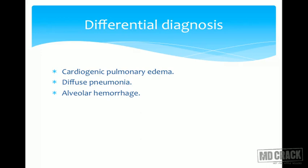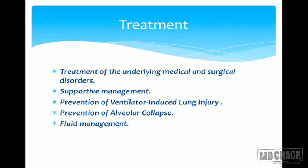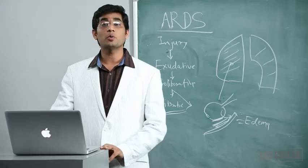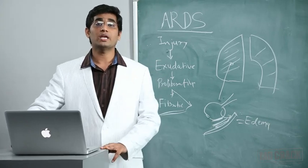Coming to differential diagnosis, the commonest is cardiogenic pulmonary edema, followed by alveolar hemorrhage and diffuse interstitial pneumonitis. For treatment of ARDS, you need to treat the underlying medical or surgical cause, followed by supportive care, prevention of ventilator-induced lung injury, prevention of alveolar collapse, and fluid management.